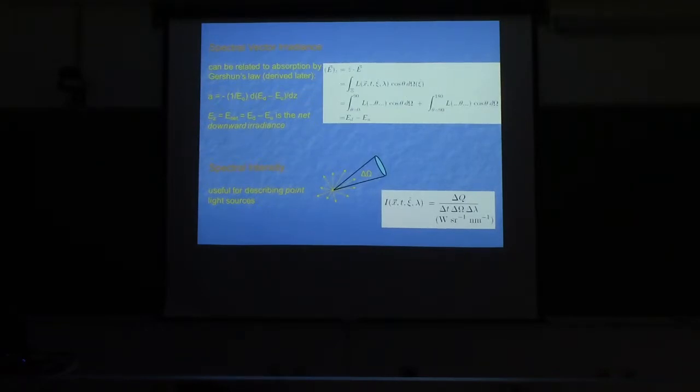Integrating over a solid angle, you get an X, Y, and Z component of irradiance, but people normally only look at the Z component.